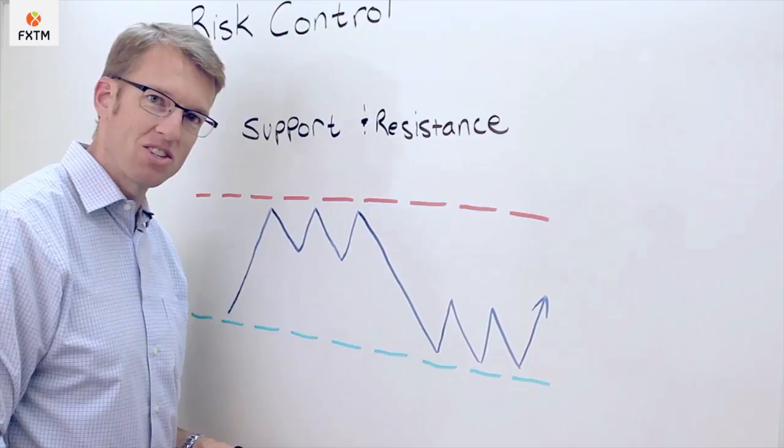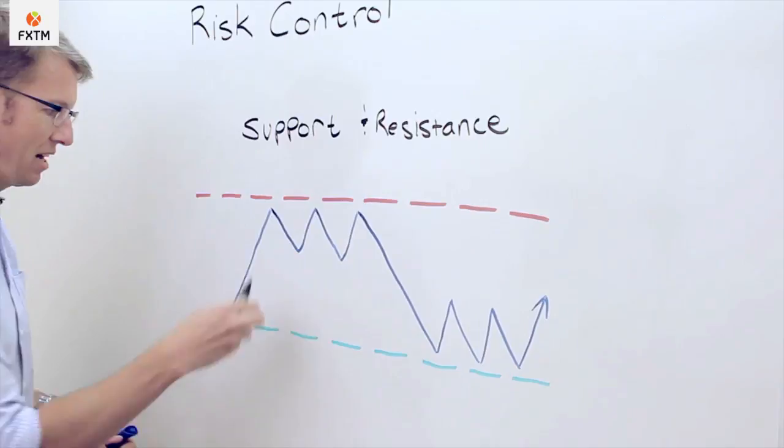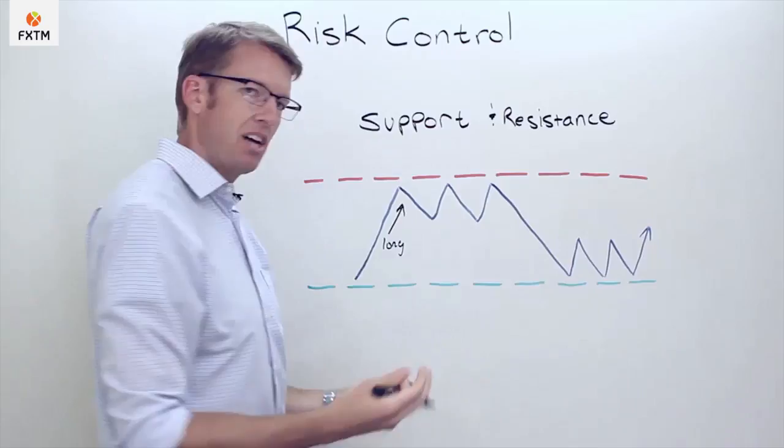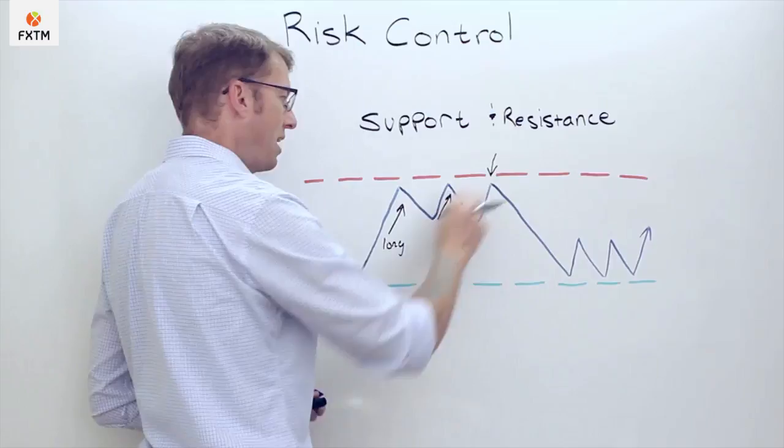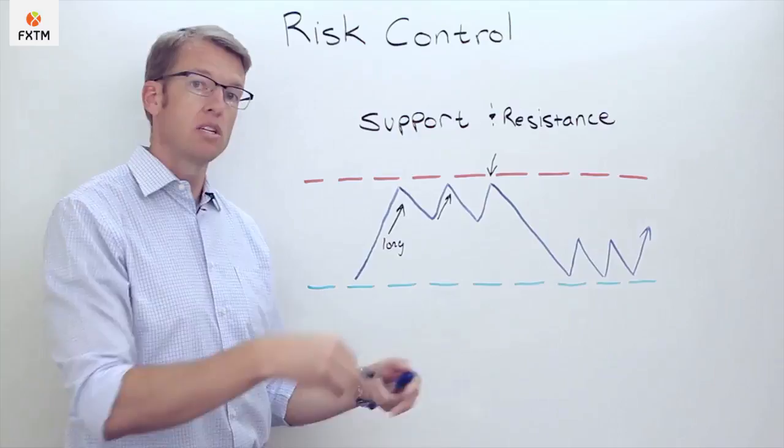So let's say, for example, that we have long traders who have been riding this trend to the upside. Now eventually they start to perceive that there's a level of resistance here. So at this point, they have to know that their risk is potentially elevated at that resistance level. So therefore, they're taking the appropriate action. Rather than adding risk or initiating a long position, they may be considering taking profits or simply not initiating a new position.